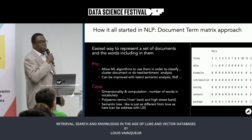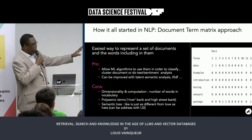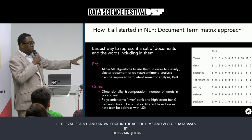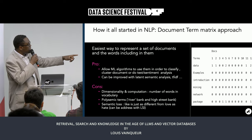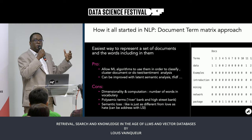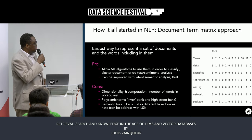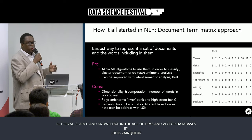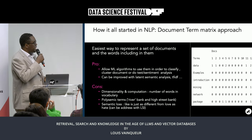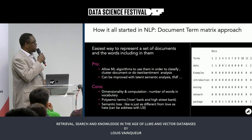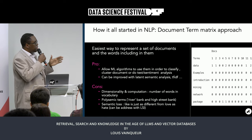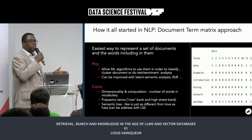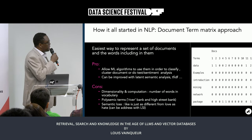Let's go a bit deeper. The term document matrix used to look like this: you have a series of documents, and in each document you count the number of words that appear. You could use this for clustering or classification to understand what topic is being talked about. That was very popular before deep learning, but it's a bit dated at this point.